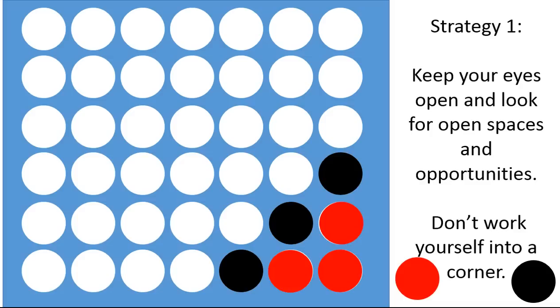So that was strategy one. Keep your eyes open, look for open spaces, and don't work yourself into a corner like this red player has done in this situation.